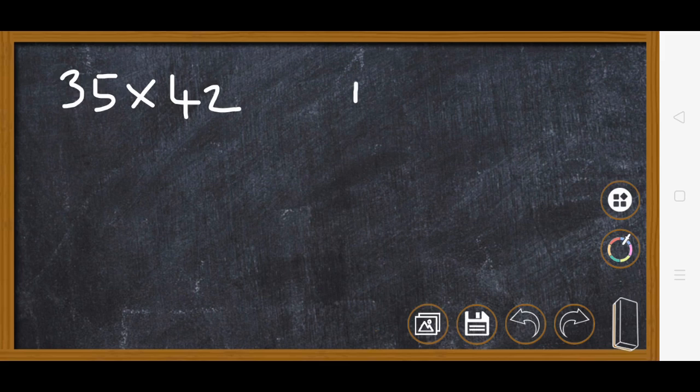You know how to multiply these two numbers by traditional method. Here I am going to explain the Vedic mathematics concept. There are two steps. Step number one: write the numbers as they are.